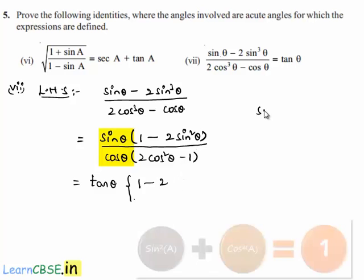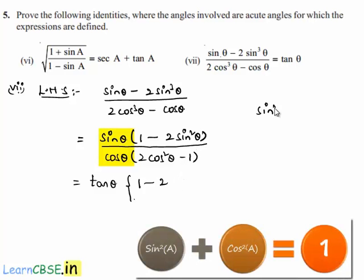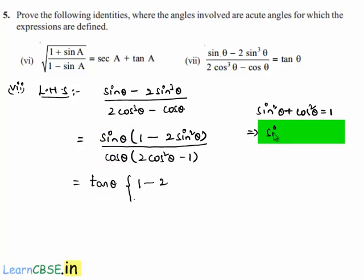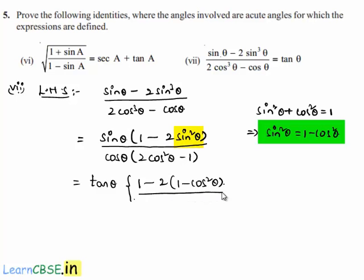Here we have the identity that sin squared theta plus cos squared theta is equal to 1, which implies sin squared theta is equal to 1 minus cos squared theta. Let us substitute it here, then we get 2 times 1 minus cos squared theta divided by 2 cos squared theta minus 1.